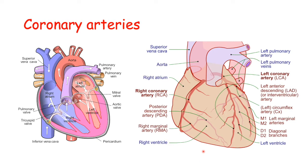The right coronary artery has its branches: the right marginal artery and the posterior descending artery, supplying the posterior portion of the heart and mainly the inferior border. The left coronary artery has two main branches: the left anterior descending artery and its associated branches, and the left circumflex artery, which supplies more the posterior side of the heart. A blockage in any of these arteries causes a heart attack, and the most common one is the left anterior descending — also called the widow maker.